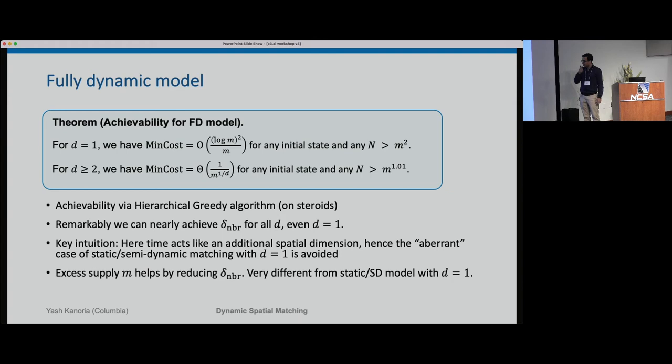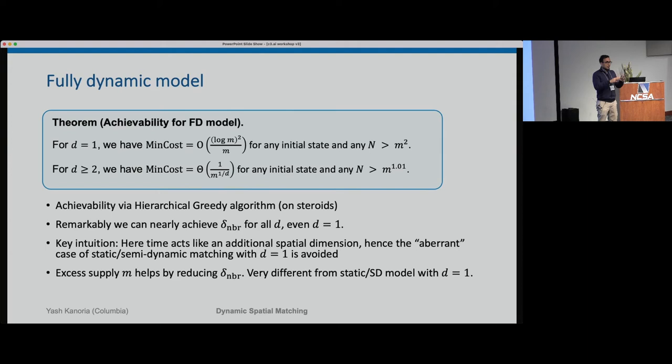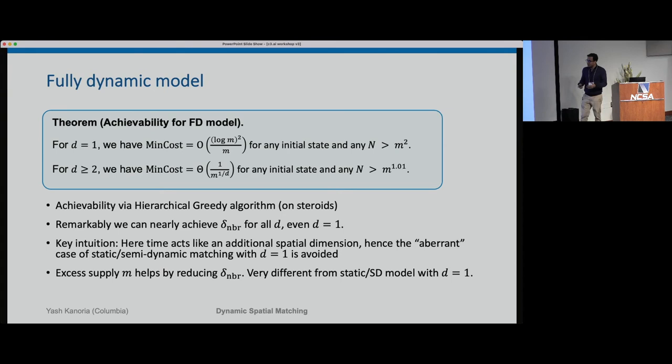Why does the 1D case not bother us the way it did when only demand was dynamic? The intuition is that time gives you an additional spatial dimension for averaging. That helps the 1D fully dynamic case achieve as much averaging as the 2D semi-dynamic or static case. So we can get good performance down to the nearest neighbor distance.